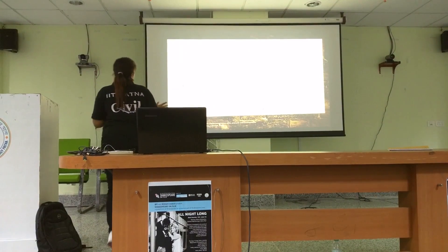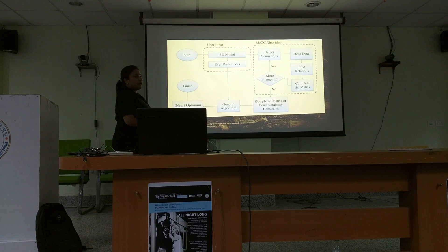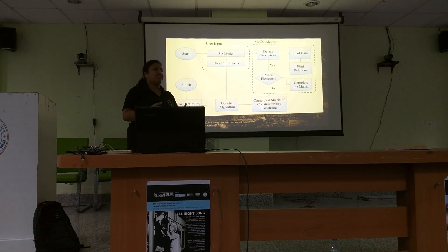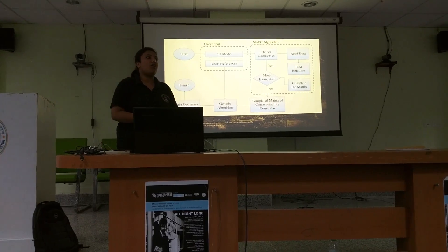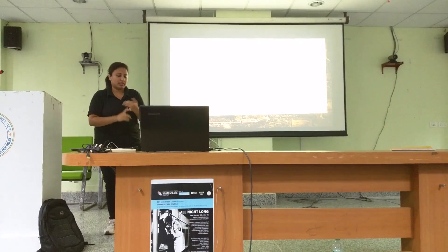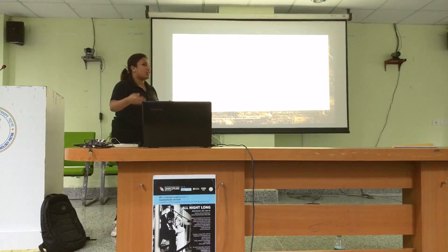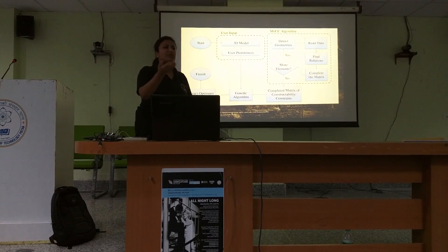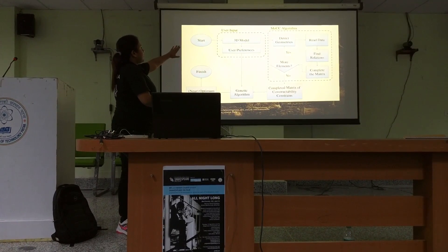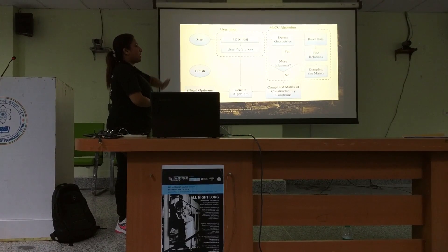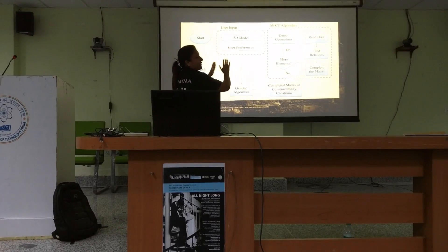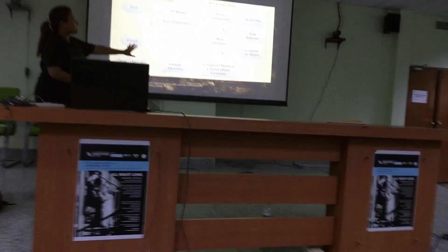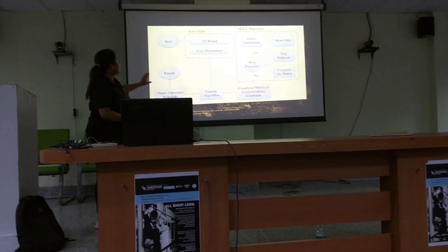First, let me tell you the algorithm we will be using for optimization of a project plan. We will give a user input. There is software known as BIM — Building Information Modeling — which is nothing but an encyclopedia of a building. It consists of 3D details of every element from columns to foundations, and also a schedule, which is the time table we use in day-to-day life. That gives us a 3D model as our user input from the BIM. Then we have the MOCC algorithm. After that we have a completed matrix of possibility — that is MOCC — which we put into the genetic algorithm, it optimizes, and we get a final output.